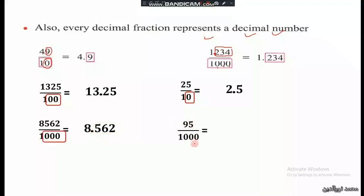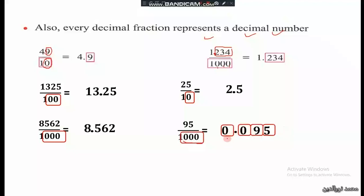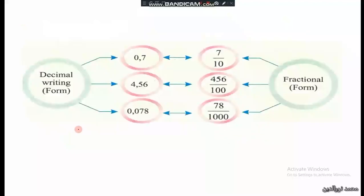Ninety-five over thousand: we have three zeros, so three decimal digits. We place the point at the third decimal digit. We should put a zero in the whole part, so it becomes zero point zero nine five.